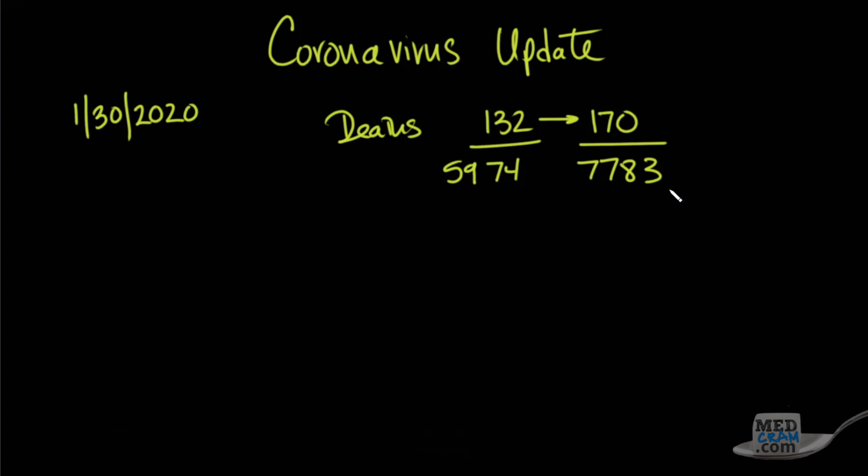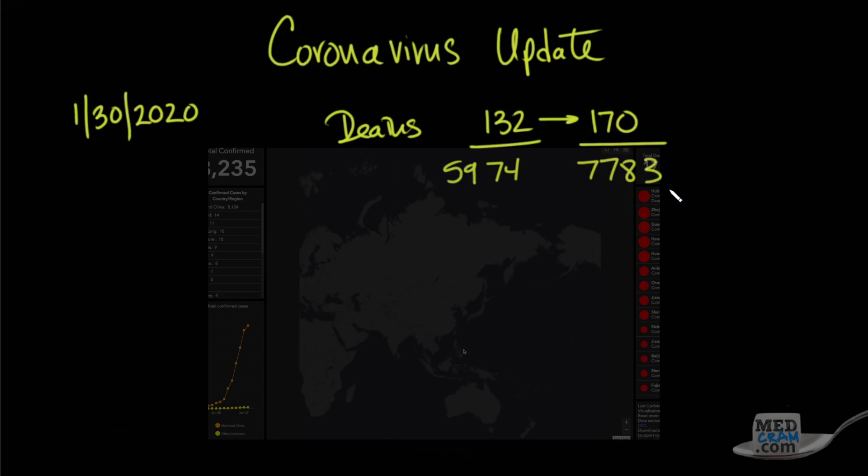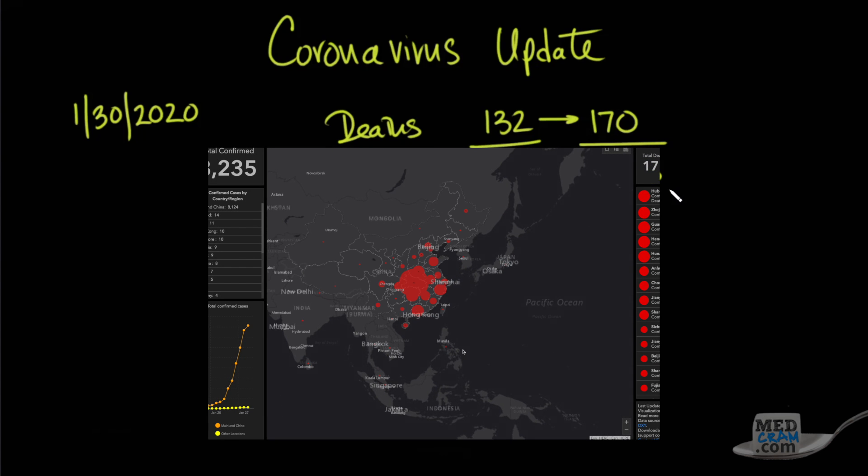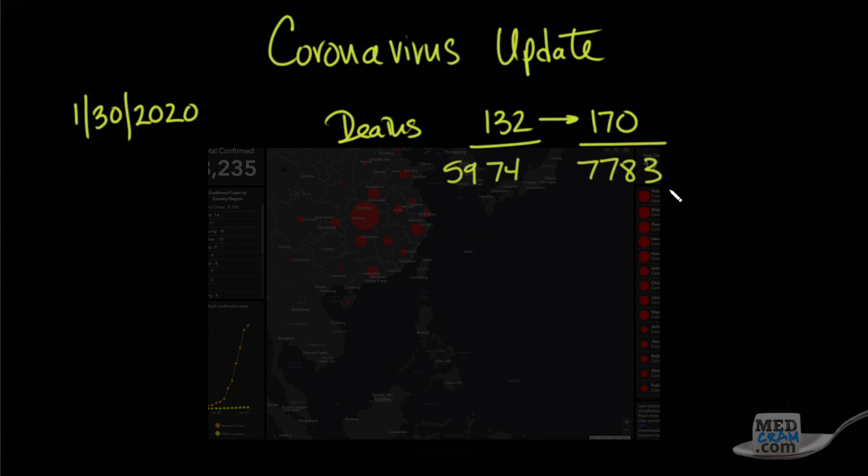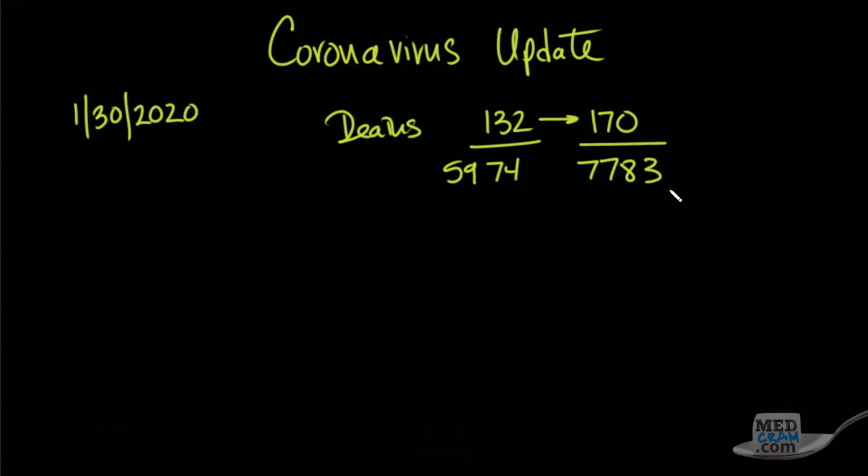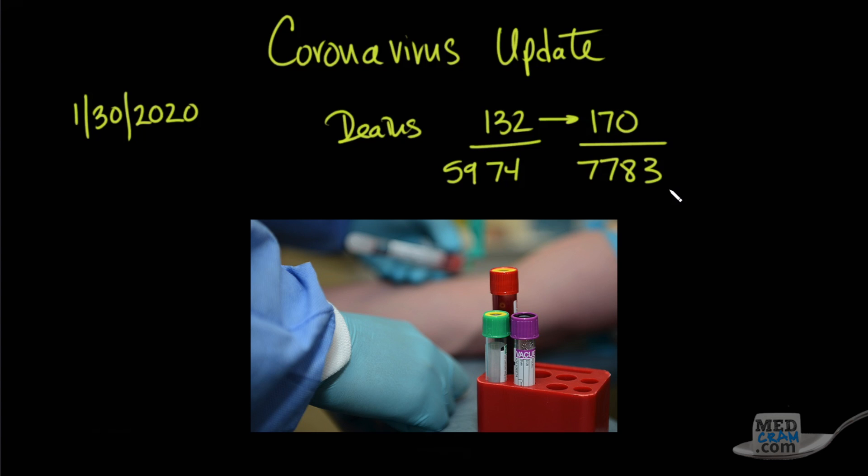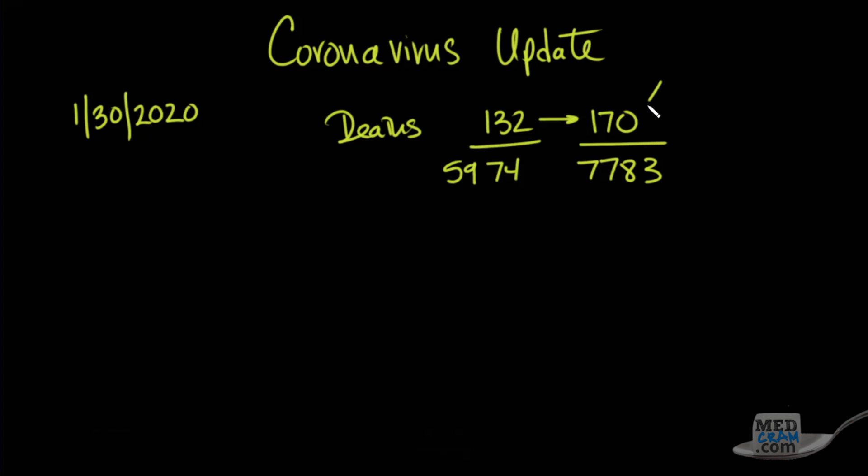Now these numbers have to be taken with a grain of salt. First of all, I'm going to give you a link where you can get an update any time of day on the number of cases. It's updated by Johns Hopkins University, and the link to that is in the description below. The other thing though is that there is a real shortage of the tests, and so that's going to affect both the numerator here in terms of deaths and also the denominator.